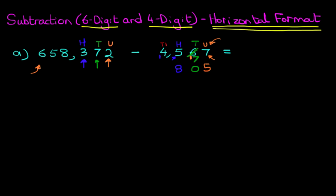How many thousands do we have? Well, we've got not four but actually five because we carried one over. And how many thousands do we need to get to? We need to get to eight. So what number added to five is going to give us eight? The answer is three. We're not carrying anything over — five plus three is eight.